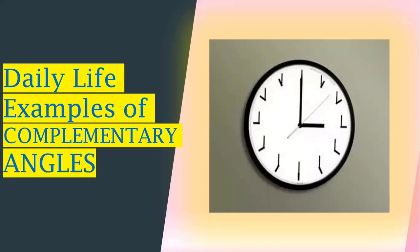Here are some examples. On this clock, the minute hand is on 12 and the hour hand is on 3, meaning the time is 3 o'clock. When the clock shows 3 o'clock, both the hour hand and minute hand make 90 degrees. This arm and this arm make angles of some degree, and the second hand forms the common arm. Adding this angle and this angle, we get the 90 degree angle.